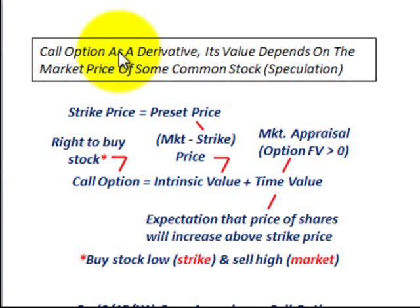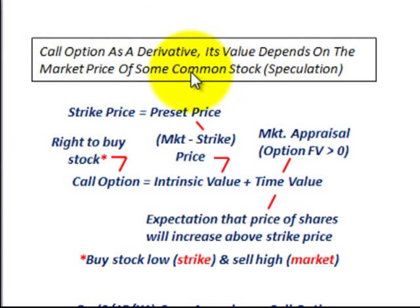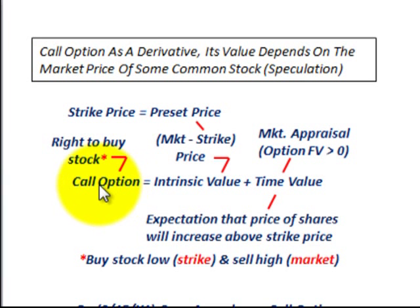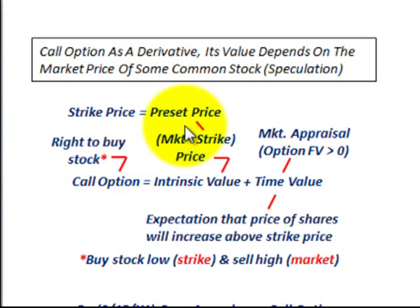What we're going to be looking at here is a call option as a derivative. That's where its value depends on the market price of some common stock, and it's used in speculation. So what are we talking about with a call option? That gives you the right to buy some stock in the future at a specified preset price, and we call that the strike price.